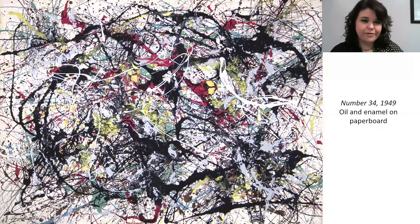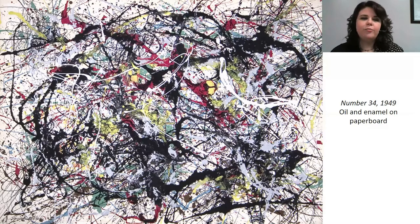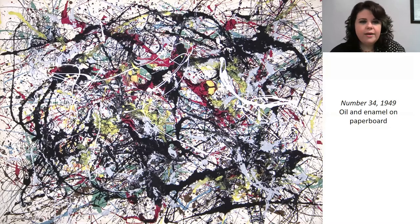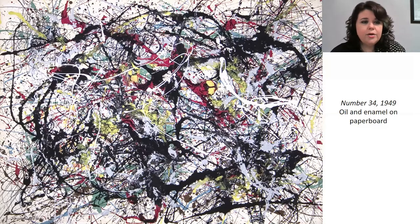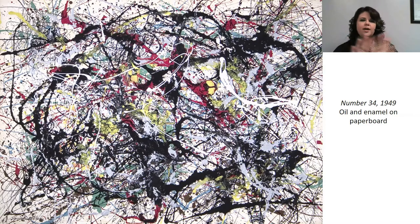This one is called Number 34, from 1949. He made it with oil and enamel — a kind of paint — on paperboard. You can tell it looks like he just splattered paint all over it. But if you look more carefully, let's look at the colors: there's a lot of white in the background with some white on top, a lot of black splatters, brown, green, yellow, blue, kind of red — all kinds of colors in this picture. I want to know: what does this picture look like to you, or what does it remind you of, and how does it make you feel?